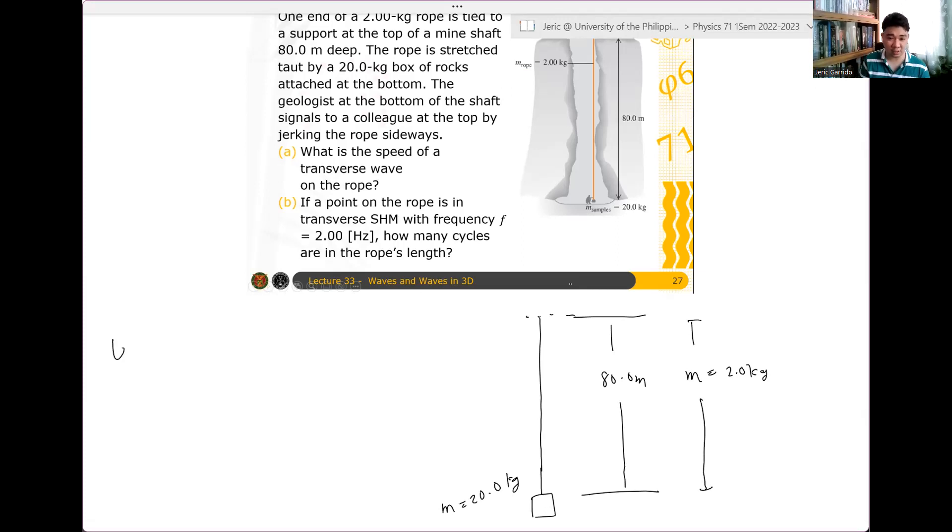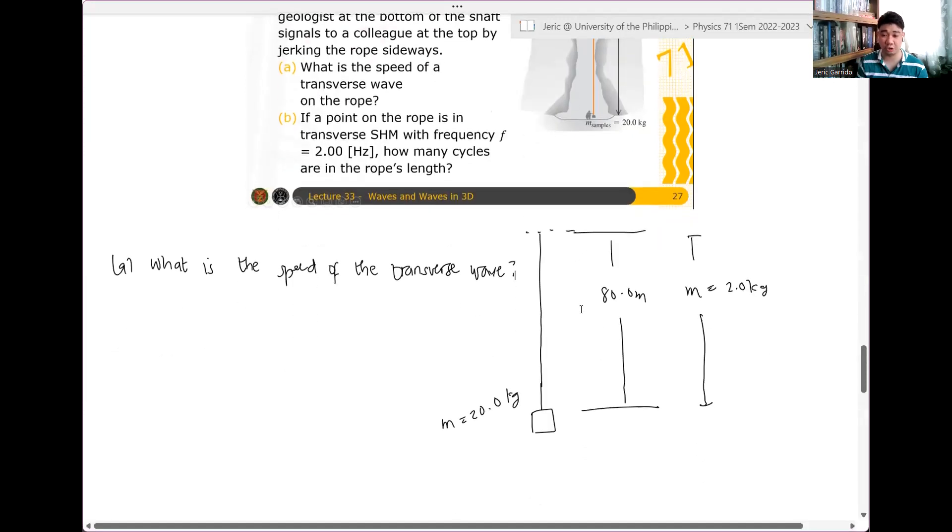The question is, letter A, what is the speed of this, of the transverse wave? Recall that the velocity is just equal to square root of F over mu, where F there is the force that is exerted on the string, or on the rope.